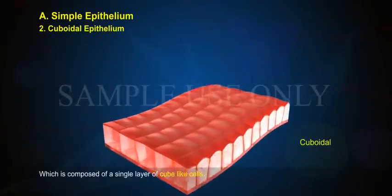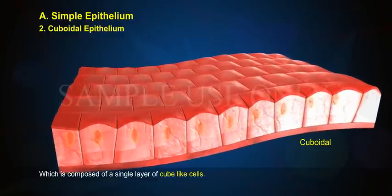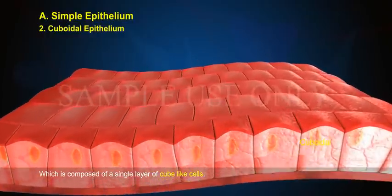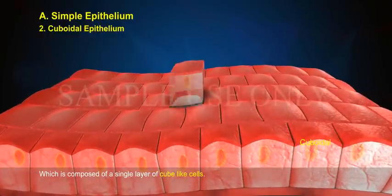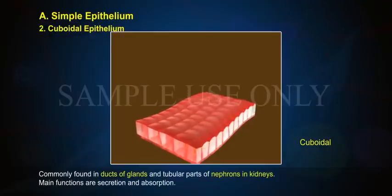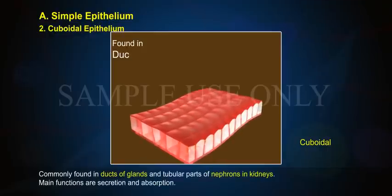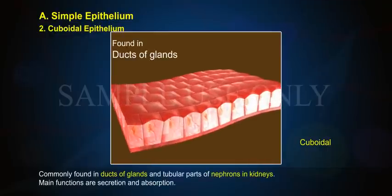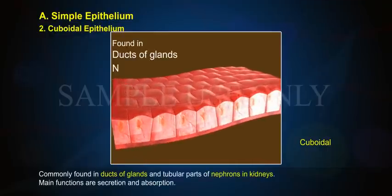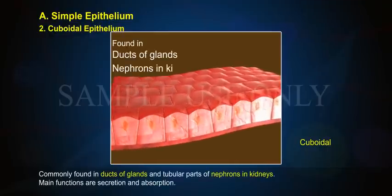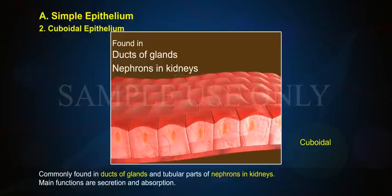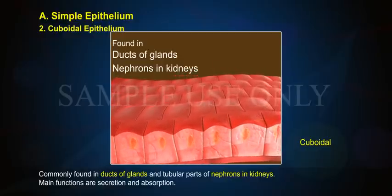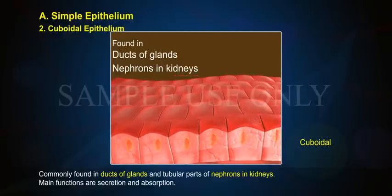2. Cuboidal epithelium, which is composed of a single layer of cube-like cells, commonly found in ducts of glands and tubular parts of nephrons in kidneys. Main functions are secretion and absorption.